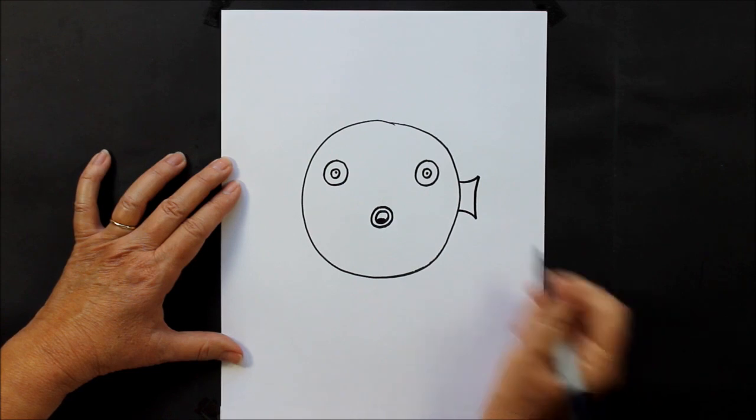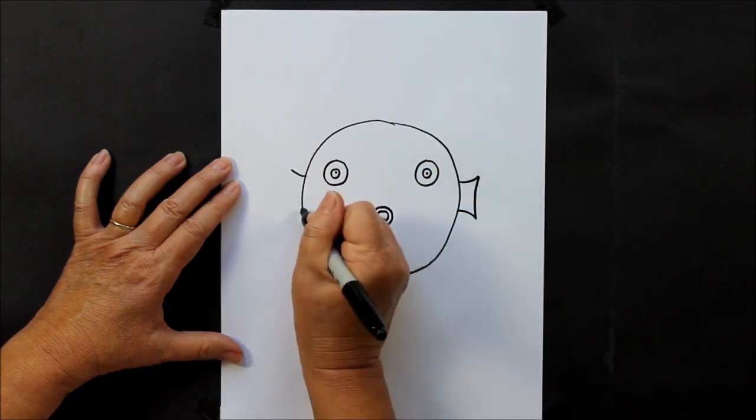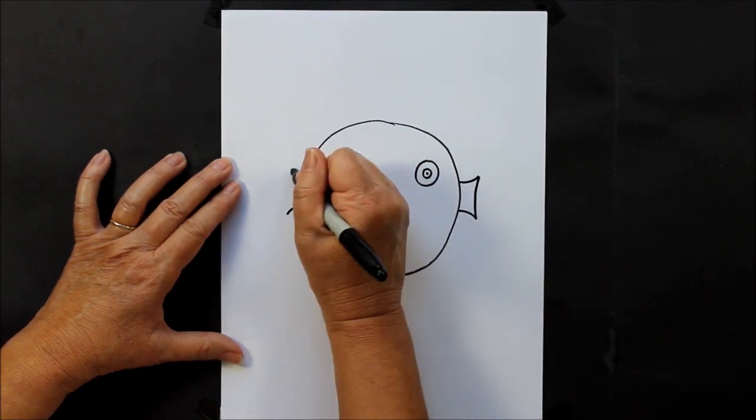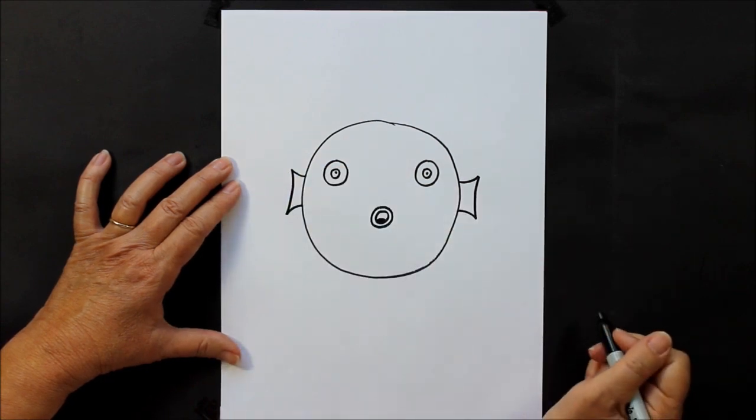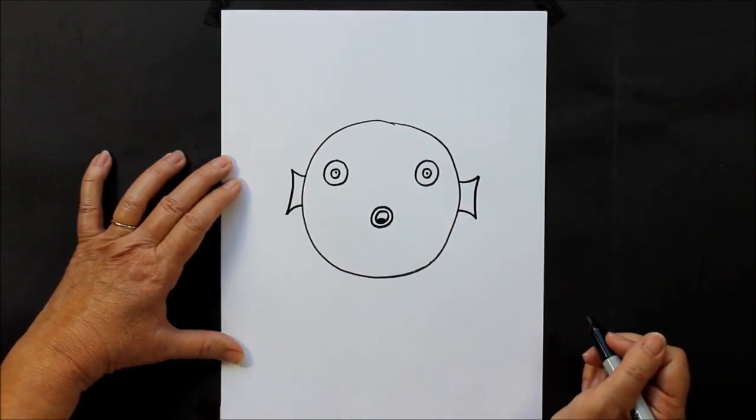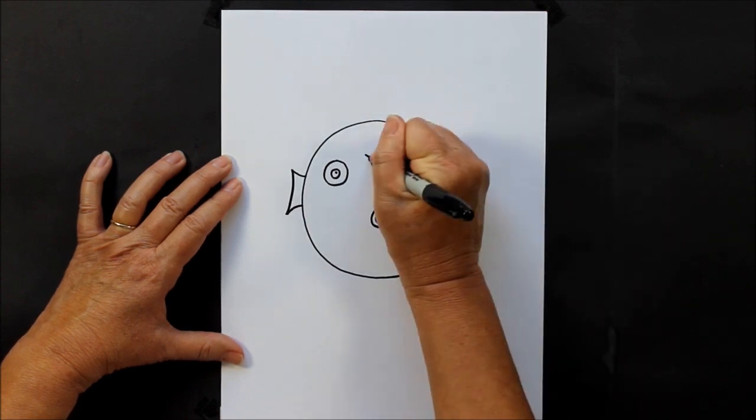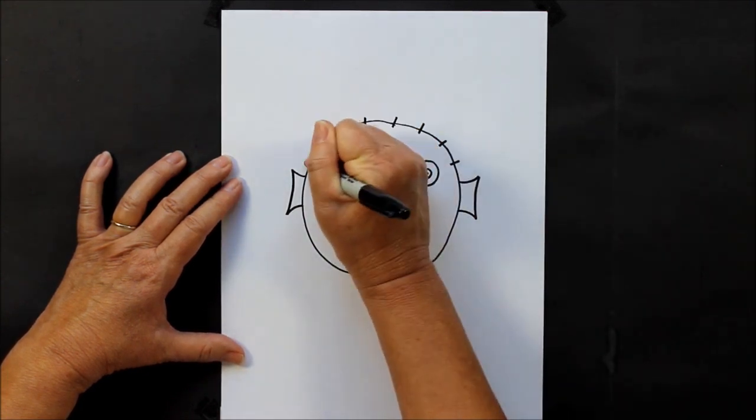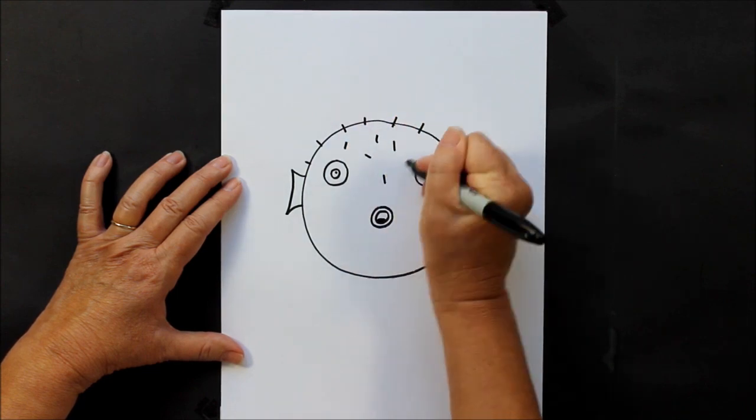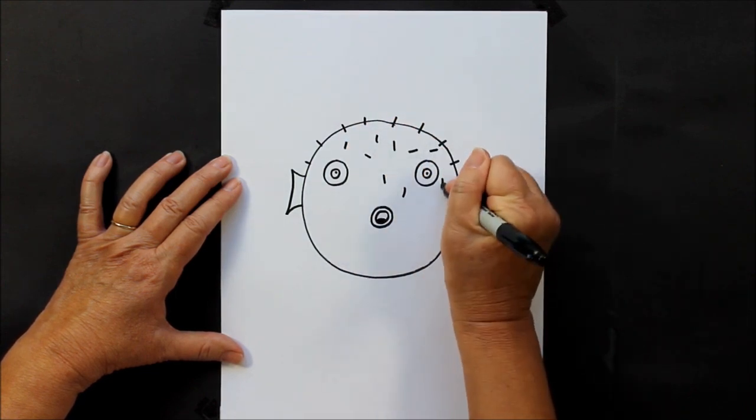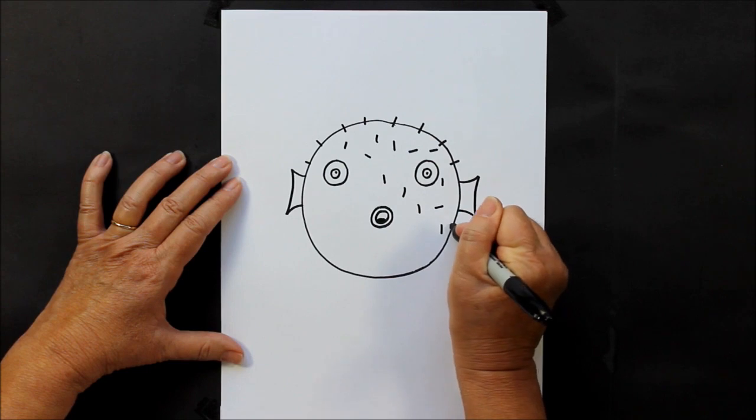Now what he needs to make him a puffer fish is he needs to have his spikes. So all over his body going different ways, you can start making his spines, and this is what protects him from predators in the ocean.